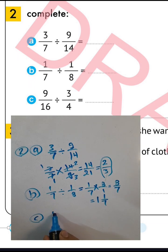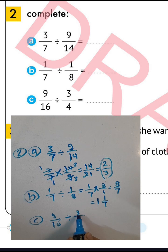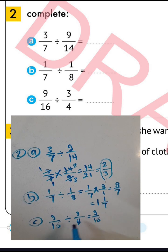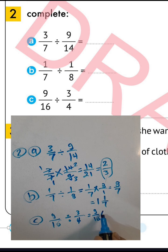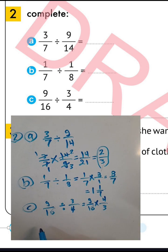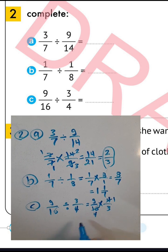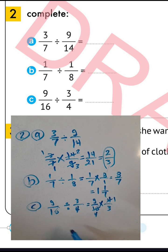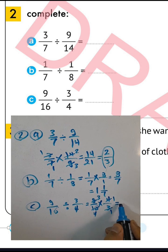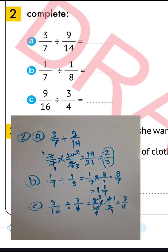Letter C: nine over sixteen divided by three over four. Write nine over sixteen, convert from division to multiplication and write four over three. Four divided by four equals one, sixteen divided by four equals four; three divided by three equals one, nine divided by three equals three. One times three equals three, one times four equals four. The result is three over four.